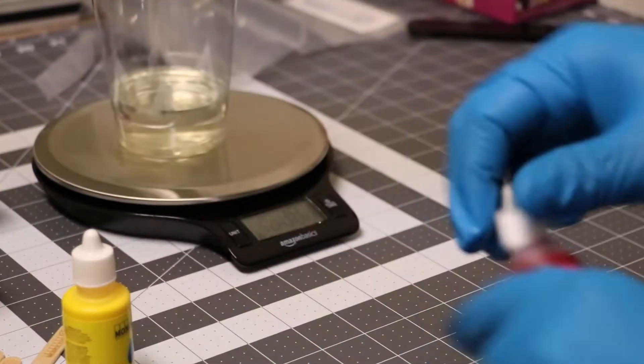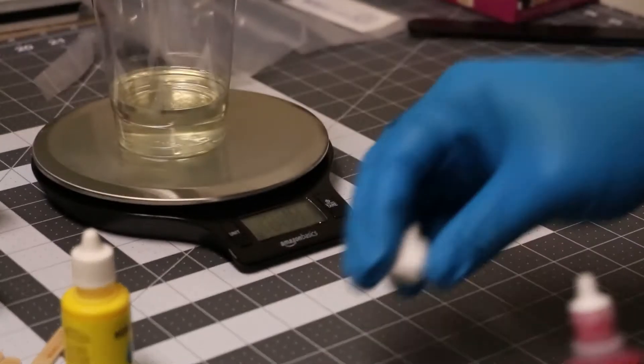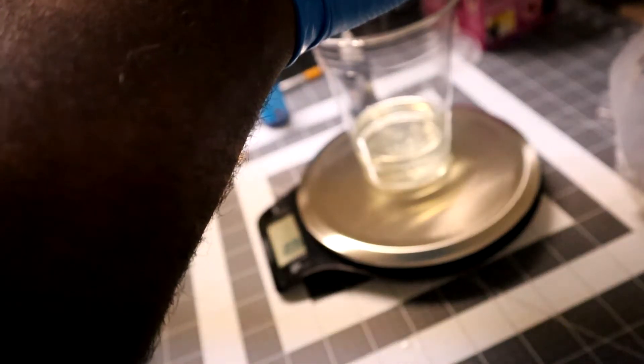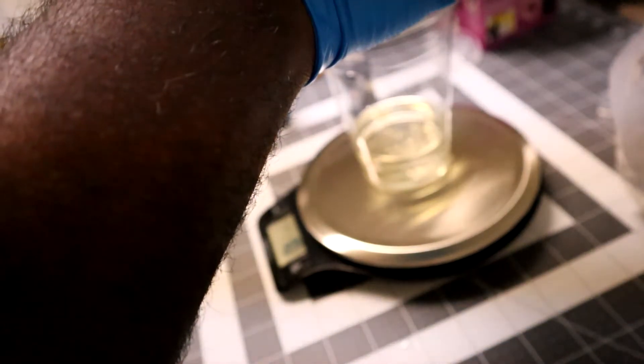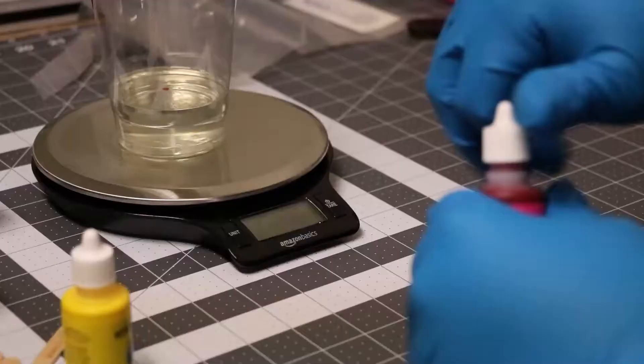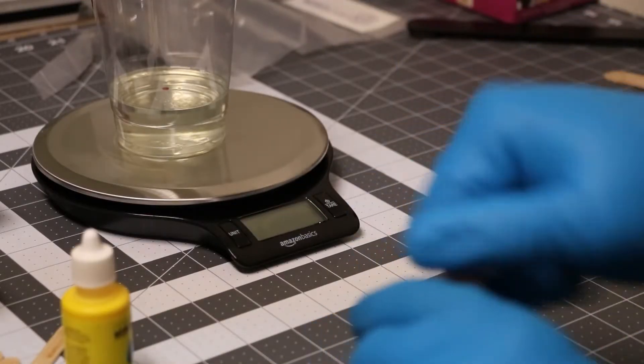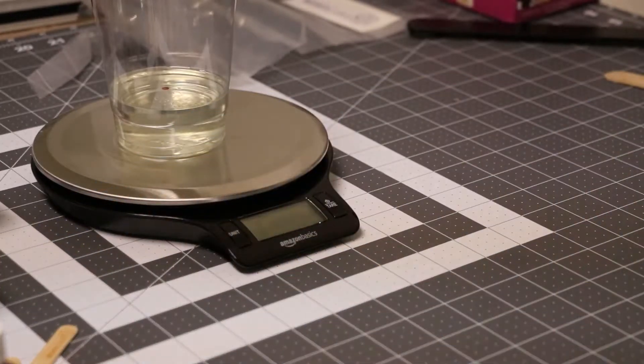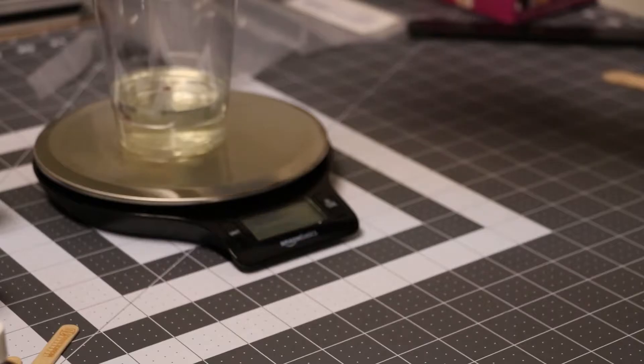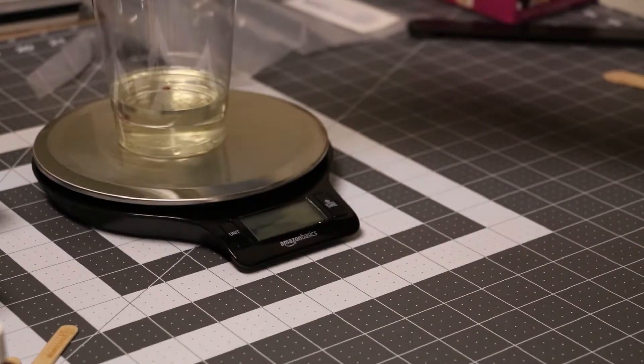Now that I have my resin measured out, I'm going to add one drop of magenta to three drops yellow. That's 33% magenta and 100% yellow, so I just converted that into four drops: three drops yellow, one drop magenta to get that ratio.